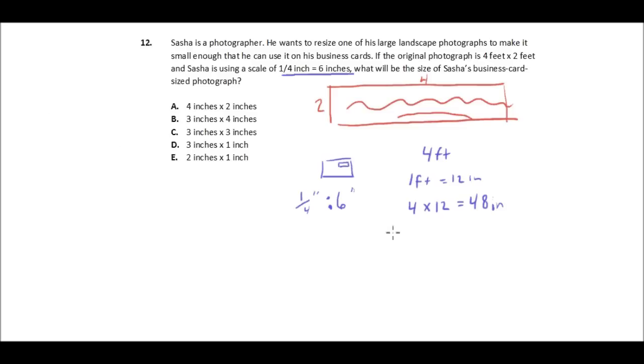And then we can divide that 48 by 6, and we would get 8. 6 times 8 is 48. So we have 8 6 inch increments.